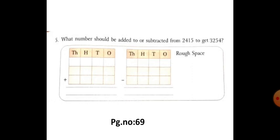Next, fifth question, page number 69. What number should be added or subtracted from 2415 to get 3254?